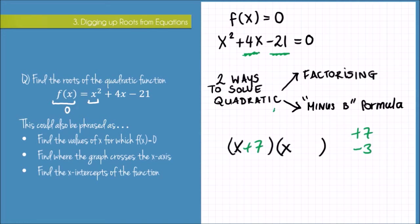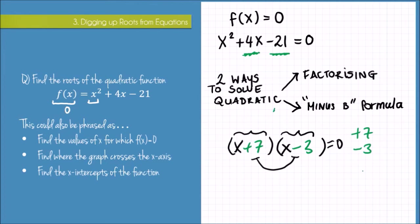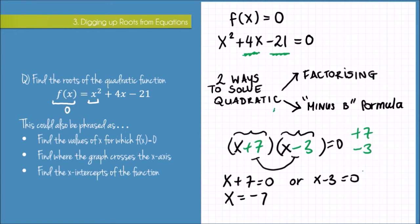So we have (x + 7)(x - 3) = 0. To solve that, for this product of two terms to equal 0, either the first factor has to equal 0 or the second factor has to equal 0, because there's no other way you could multiply two things together and get 0. So either x + 7 = 0 or x - 3 = 0. Solving those two gives us our roots: x = -7 or x = 3.